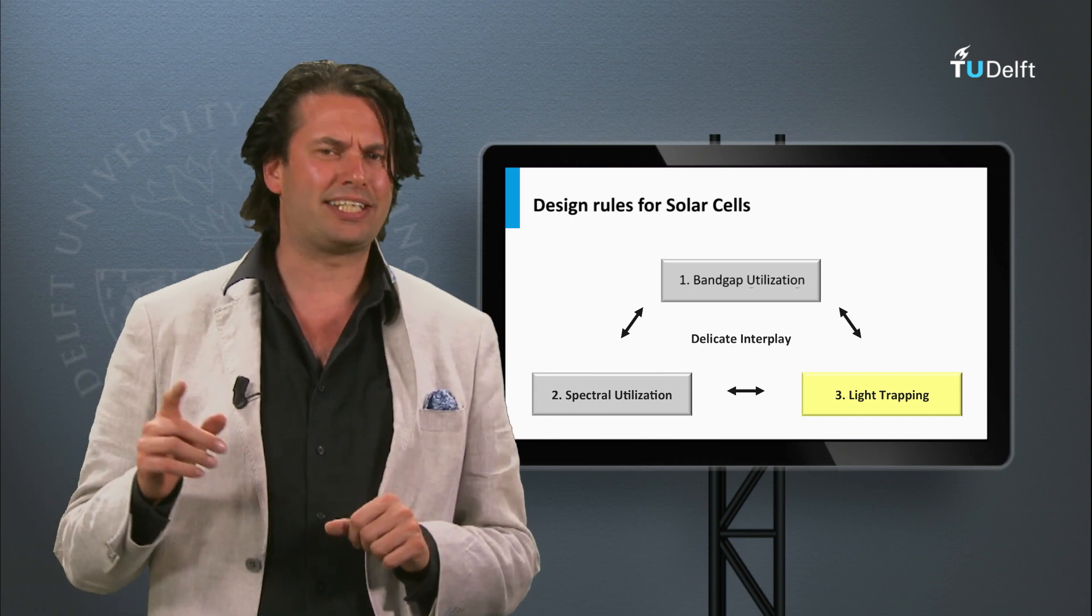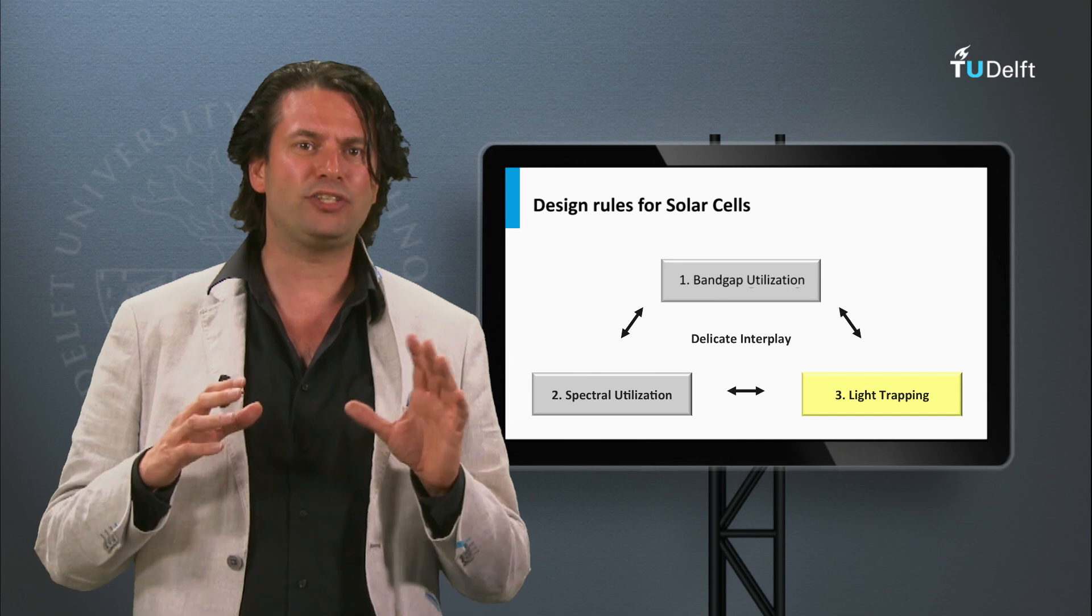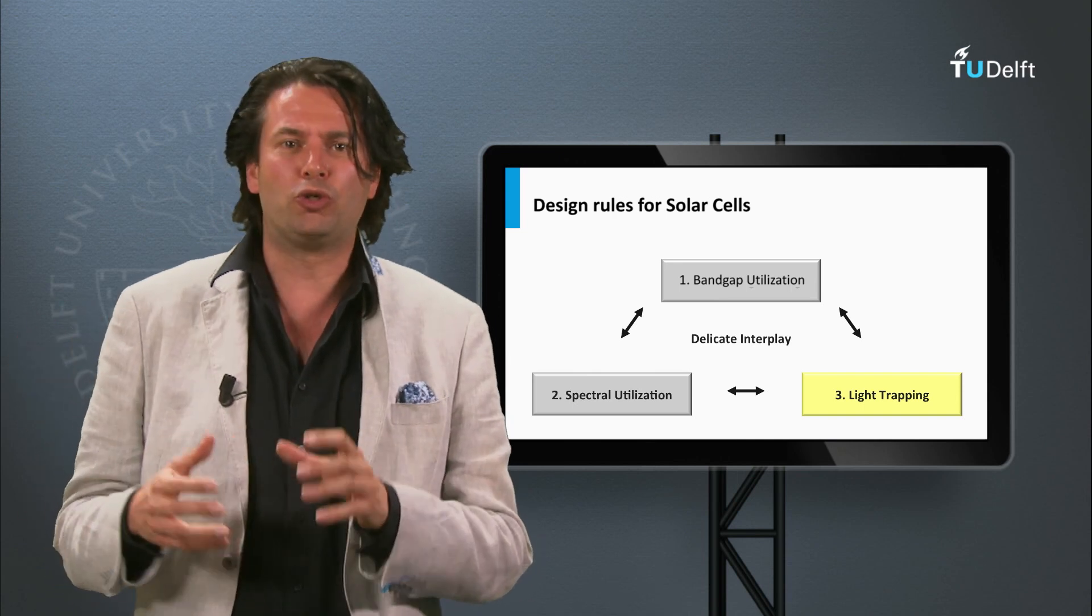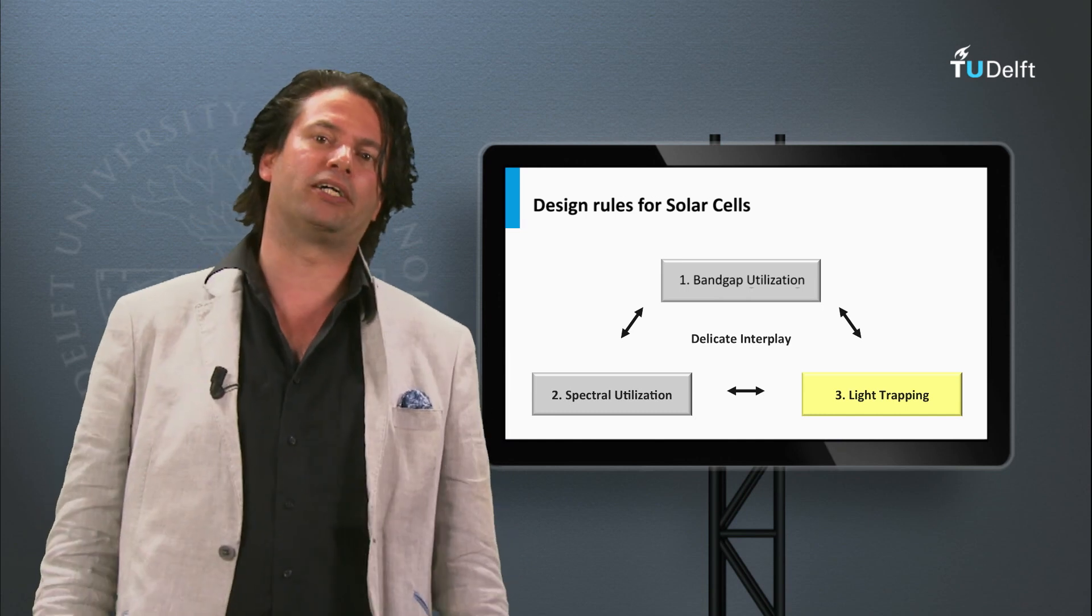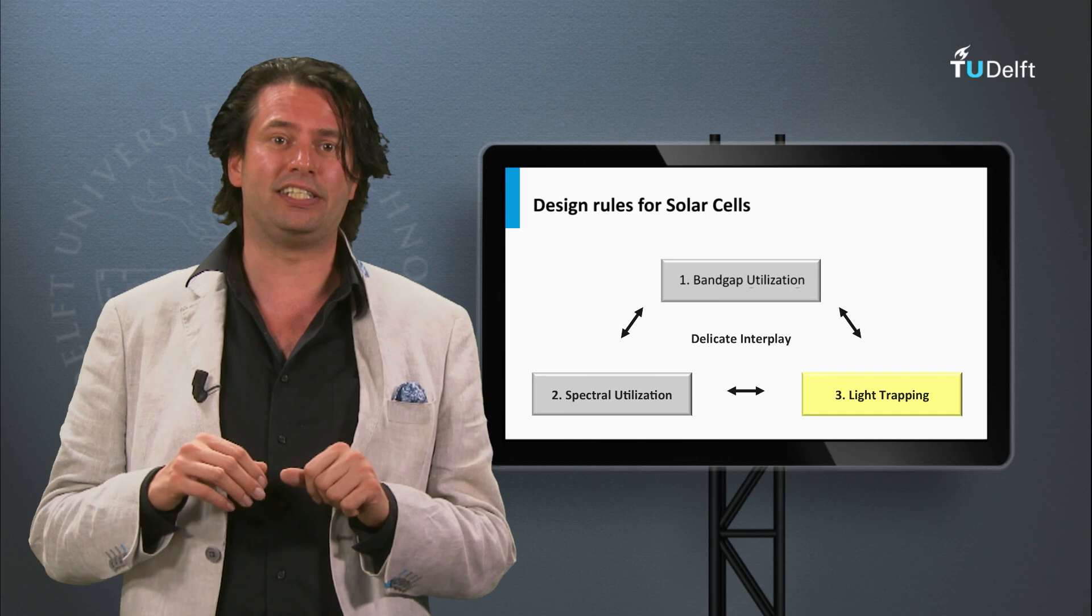The last engineering tool is light trapping. In the ideal solar cell, we want all light that is incident on the solar cell to be absorbed in the absorber layer. However, nature has not made our life that easy.